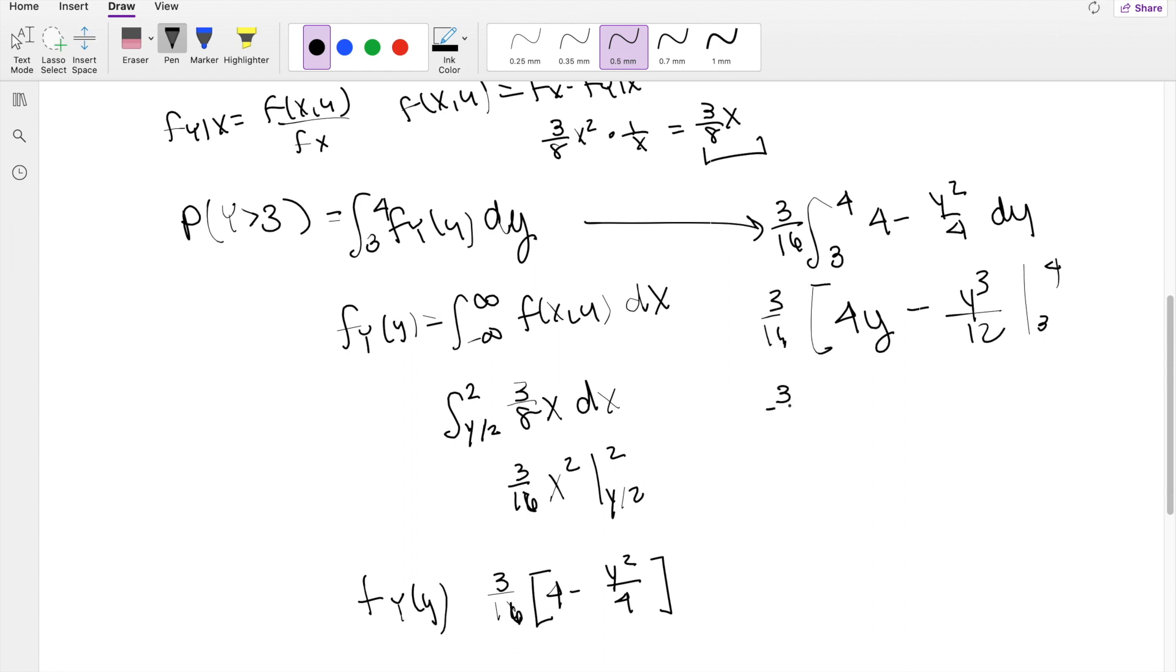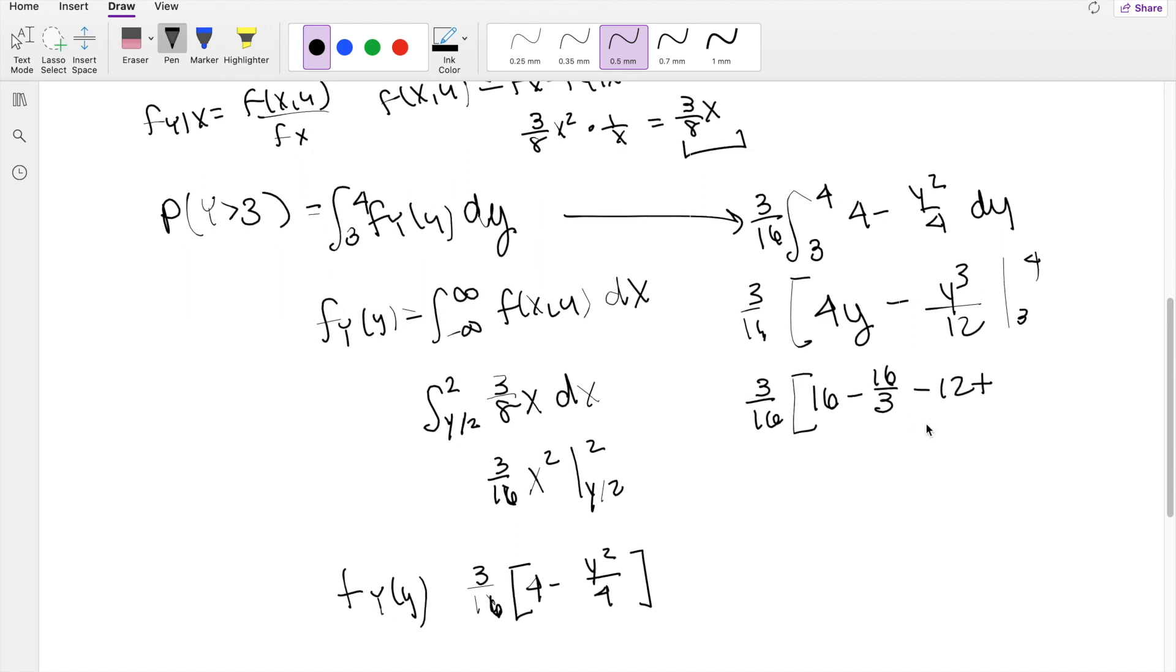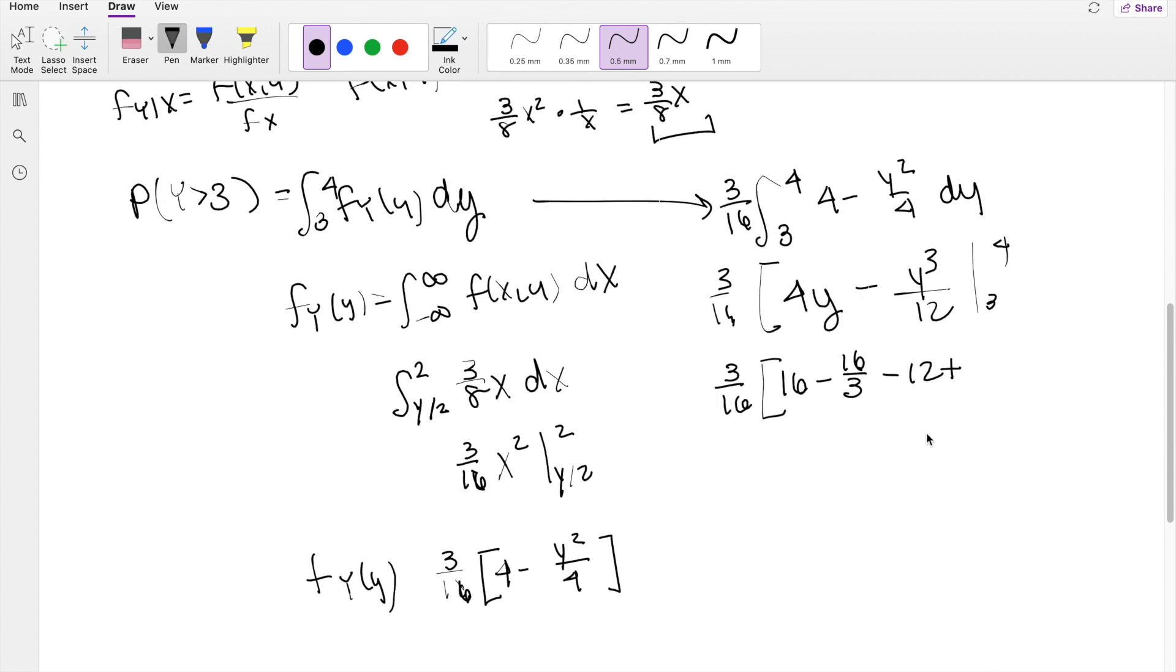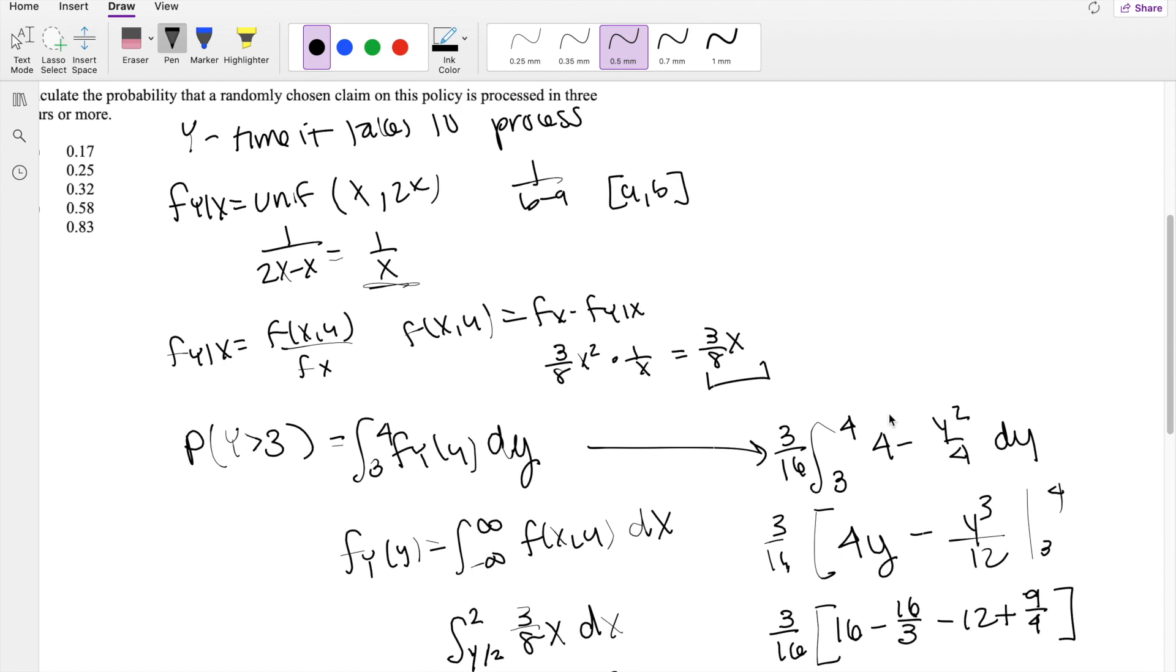Then this equals 3 over 16. Plugging in the upper limit, you get 4 times 4 which is 16, minus here 4 cubed divided by 12 which equals about 16 over 3, minus putting in the lower limit 4 times 3, 12, minus minus is positive, 3 to the cubed power is 27 over 12 which equals 9 fourths. Plugging that into a calculator, you get this is approximately equal to 0.171875, which is our answer A.